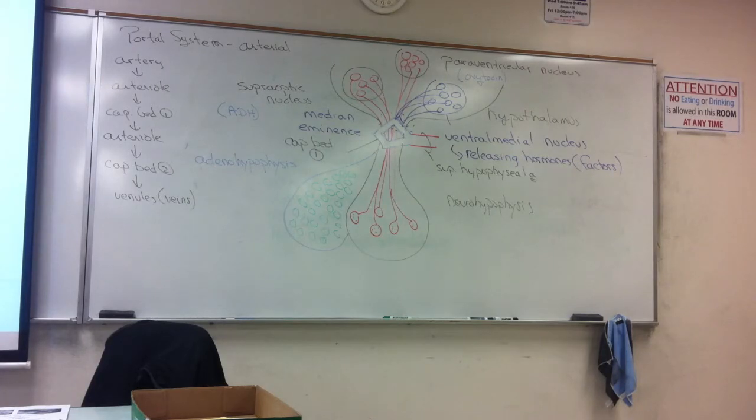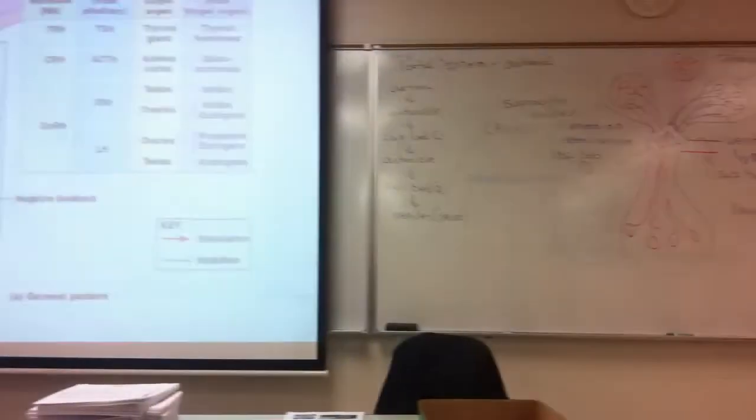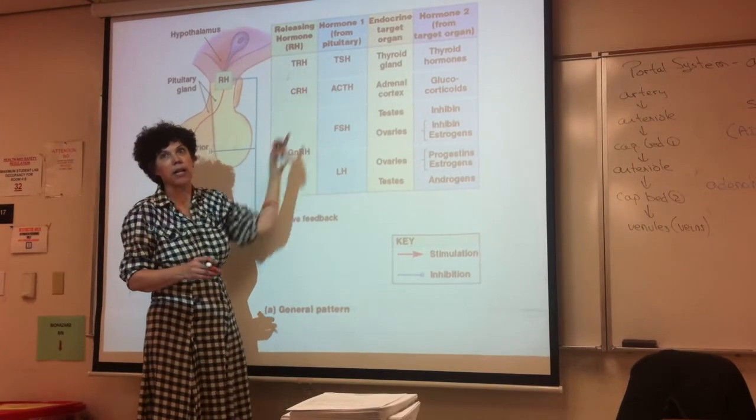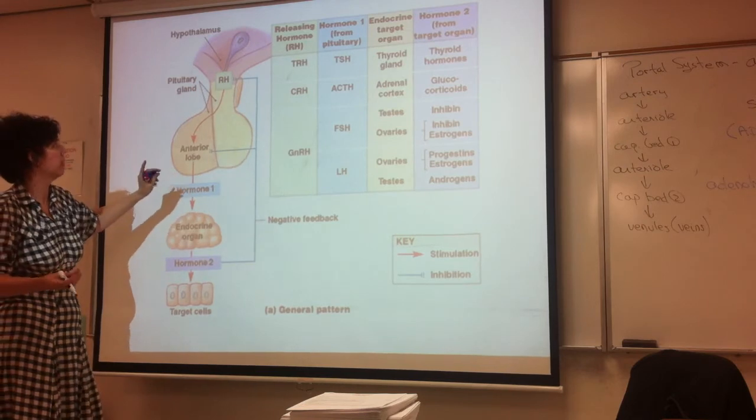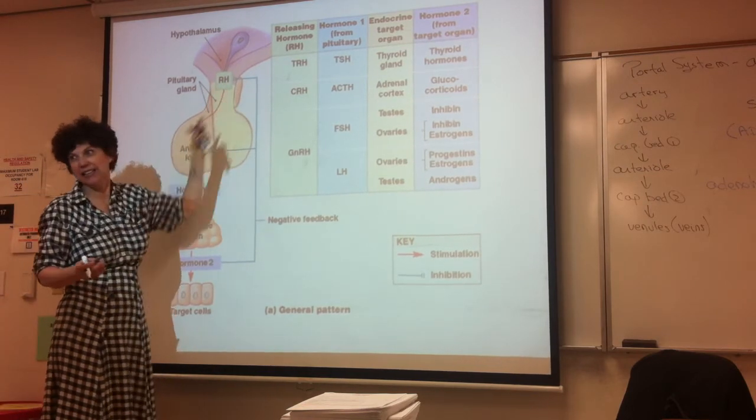Hormones from the ovaries, testes, and thyroid are leaving capillary bed one and diffusing into this area of the hypothalamus, binding to receptors, telling the hypothalamus what the level of those hormones are. At the same time it's giving off those hormones, it's picking up the releasing hormones from the hypothalamus. Gonadotropic releasing hormone, corticotropin releasing hormone, and thyroid releasing hormone, as well as dopamine, are going to be entering into capillary bed one.